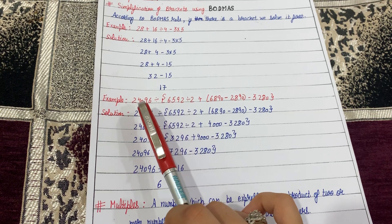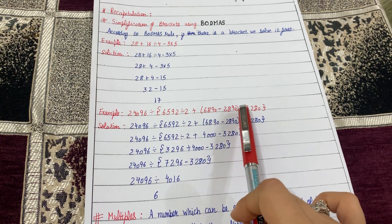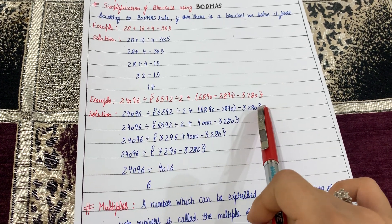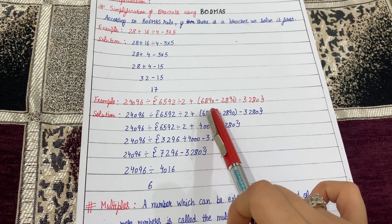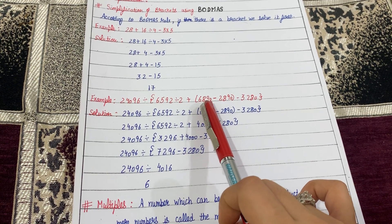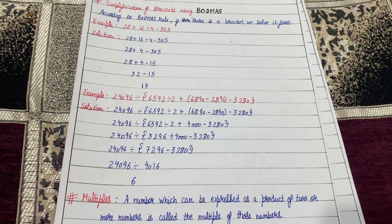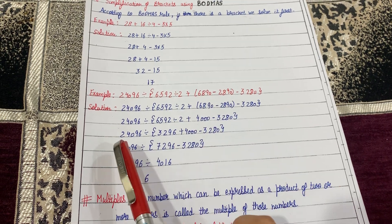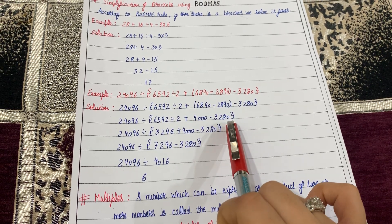Now look at the next example: 24,096 divided by a curly bracket. Inside there is a round bracket. We always solve the innermost bracket first — that is the round bracket. So first we solve the round bracket: 6,890 minus 2,890 comes out to be 4,000. When it is solved, the bracket is removed. The rest of the operations remain as they are. Now we have solved the round bracket. Next, we solve the curly bracket.